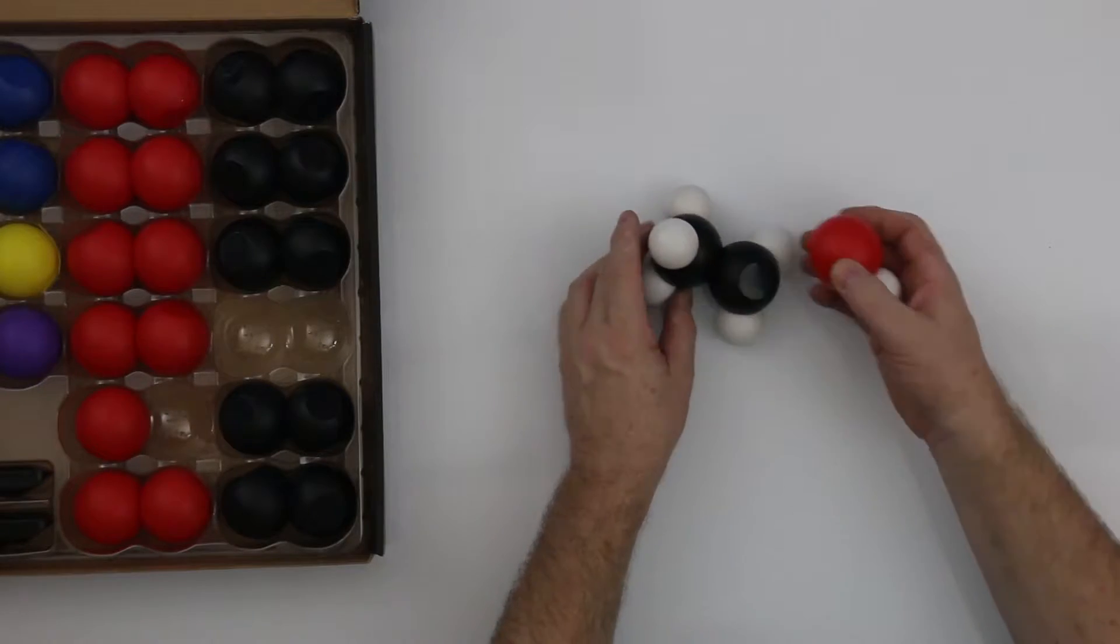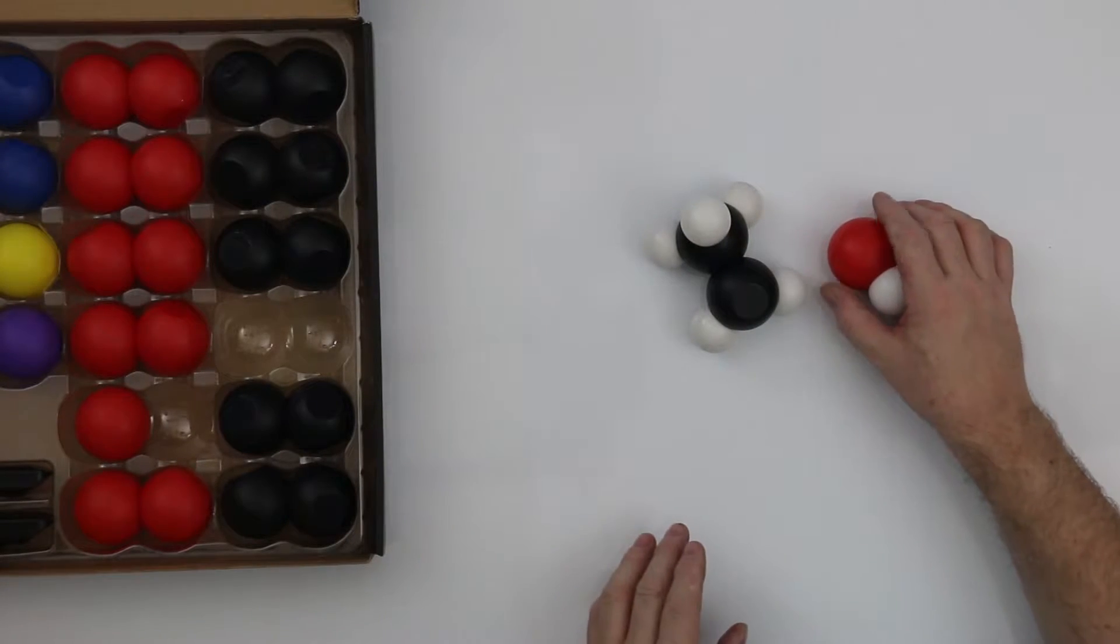I want to have a look at some different groups we can add on to some simple chemicals. So we can take a basic chain and we can add on a variety of different groups. Let's have a look at them.